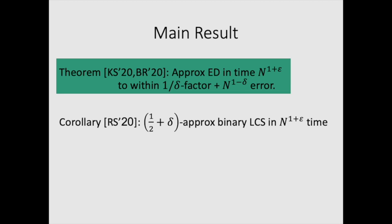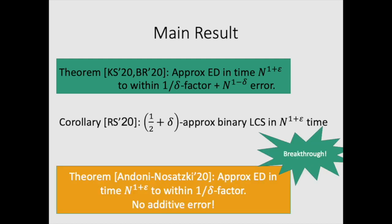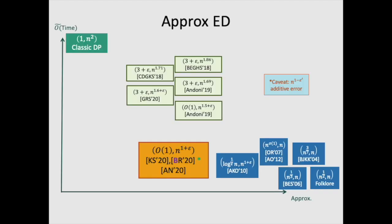Since both of these results, there's been a recent breakthrough by Andoni and Nosatsuki, which gives an n to the 1 plus epsilon time algorithm with a 1 over delta multiplicative factor, and no additive error. This thus completes the line of work of finding a constant factor approximation for edit distance in near-linear time.